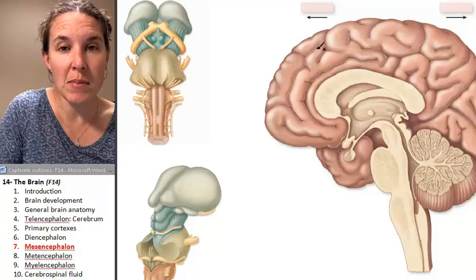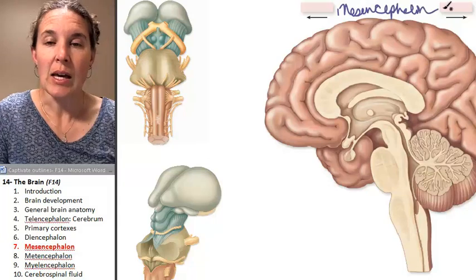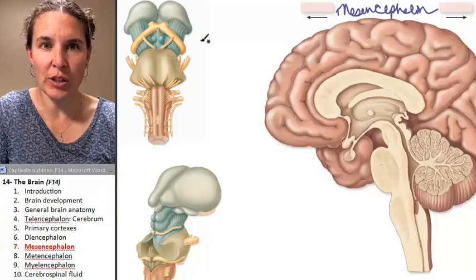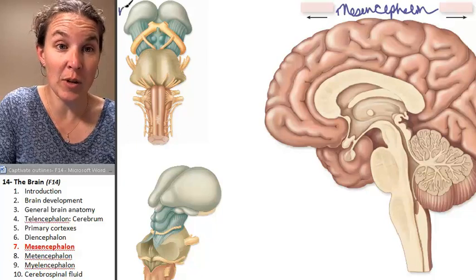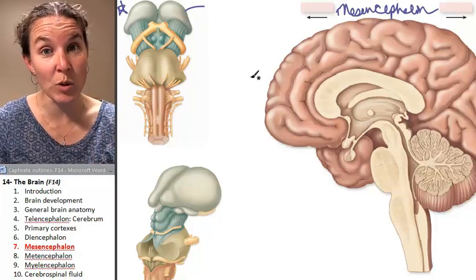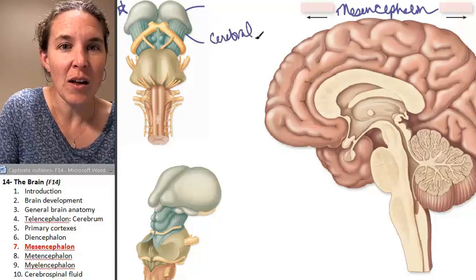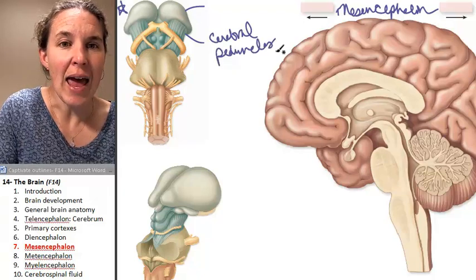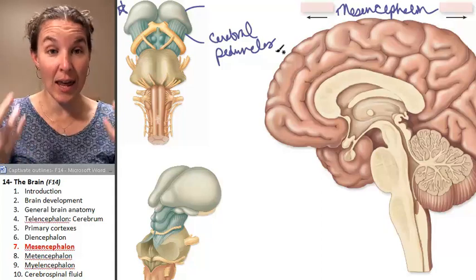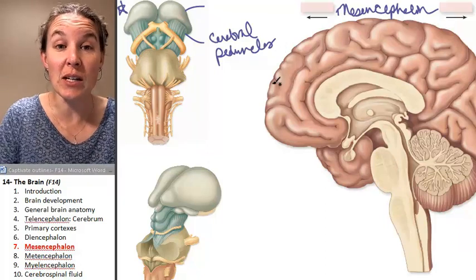Now we're going to do the mesencephalon. The mesencephalon is actually part of your brainstem. We can see the structures we're going to learn as part of the mesencephalon in this little brainstem view. Remember that the superior part is not mesencephalon — that's actually the thalamus, which came from the diencephalon. There's a structure you can see here called the cerebral peduncles, which are part of the mesencephalon.